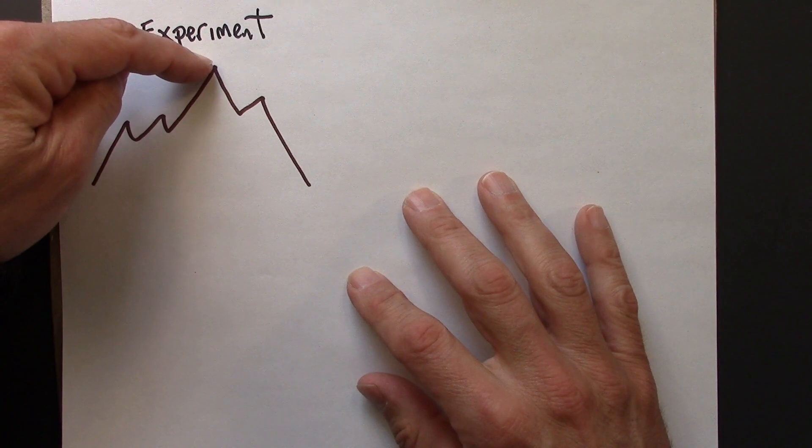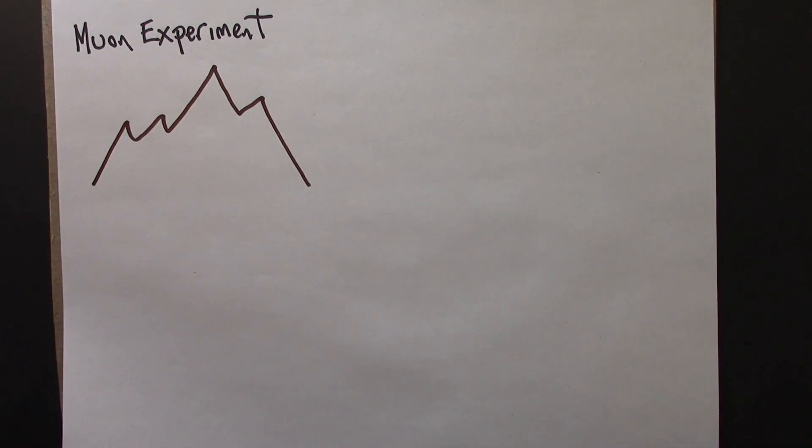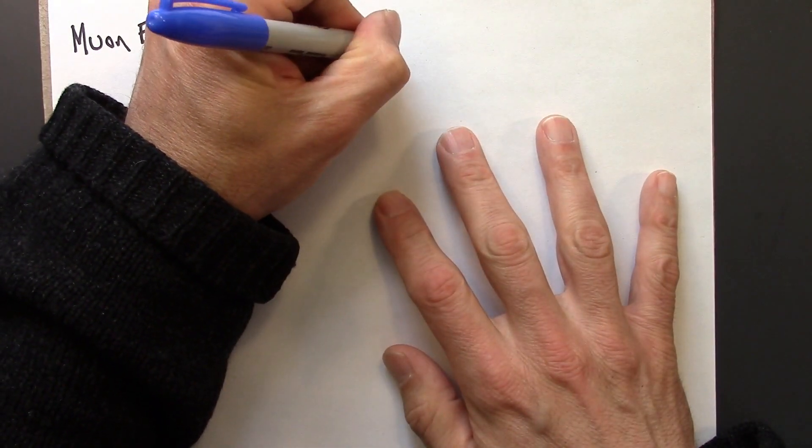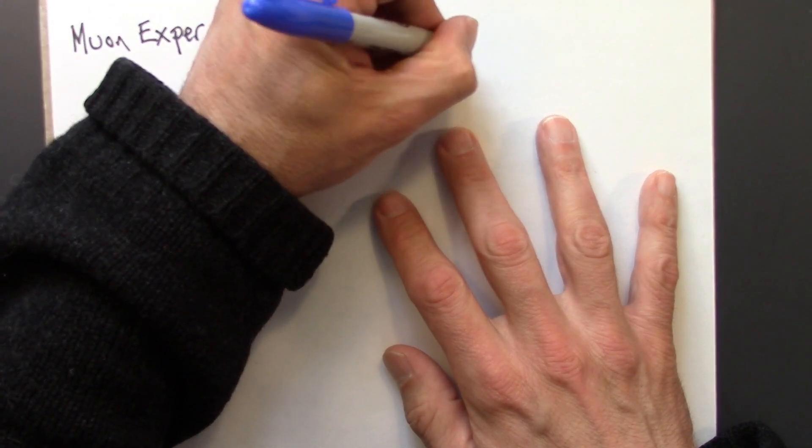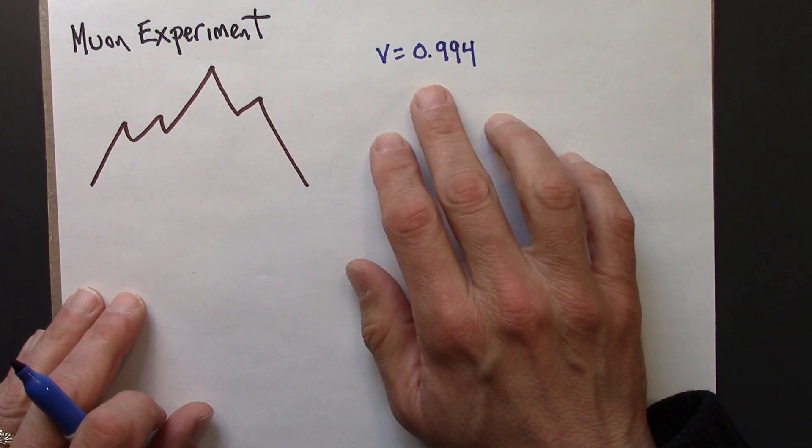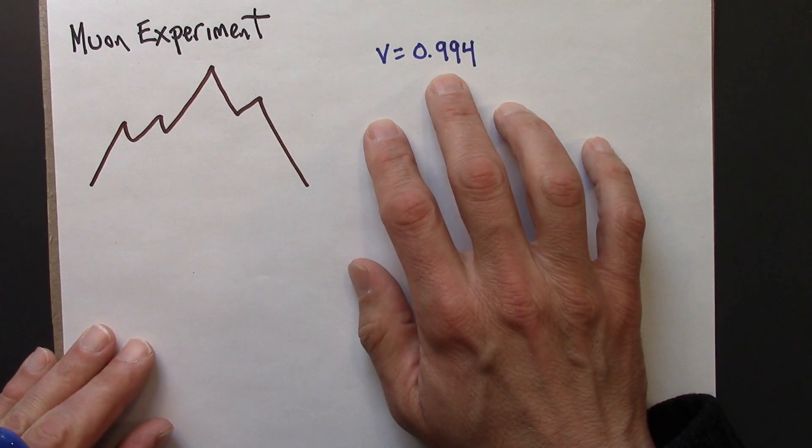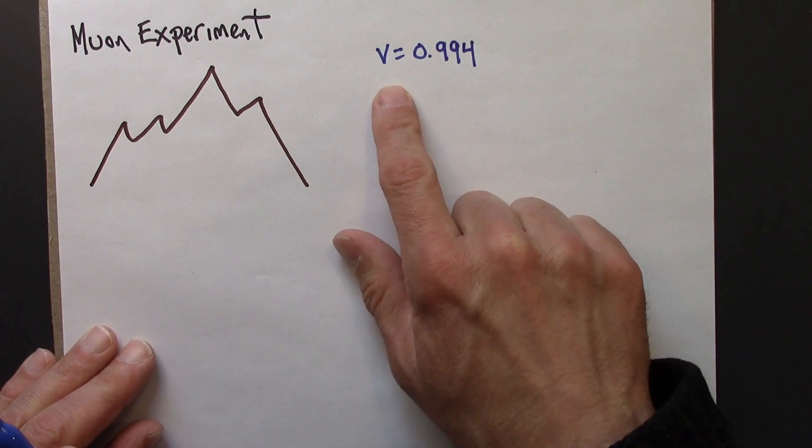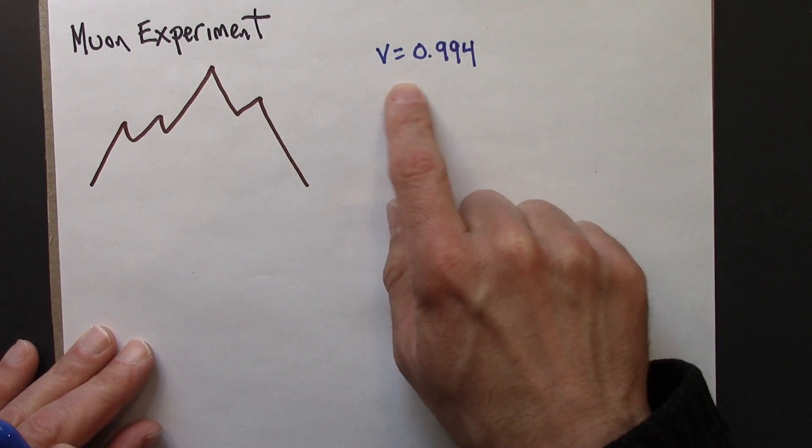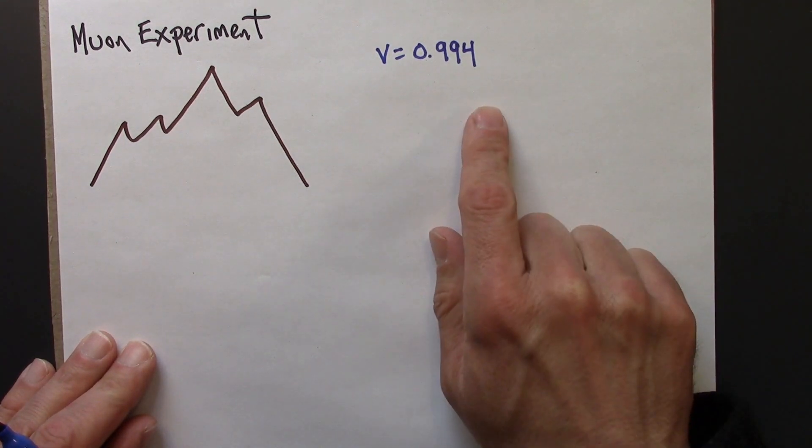How many muons did you see up here? How many muons did you see down here at sea level? In addition, they were looking at muons just at a particular speed, and the speed they chose happened to be v = 0.994. It's possible to set your muon detector up so that it only picks up muons of a particular speed.